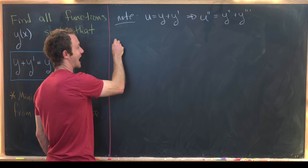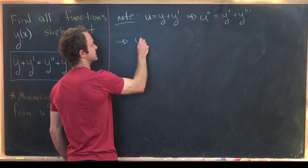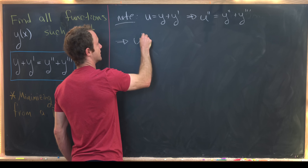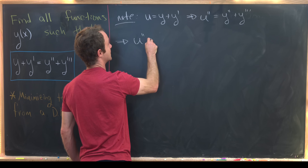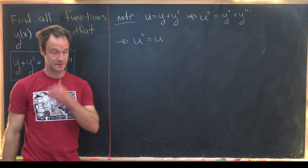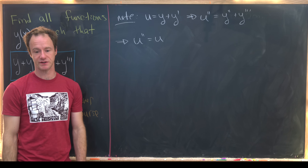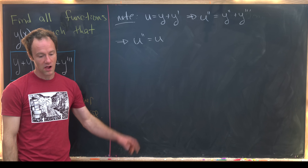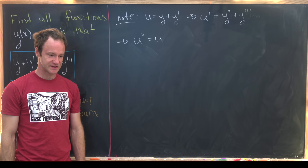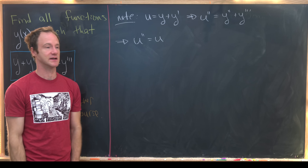That means our equation transforms into the following second order differential equation: u double prime equals u. And this is one of those differential equations that you can solve by guessing.